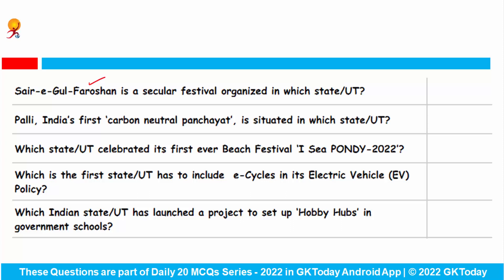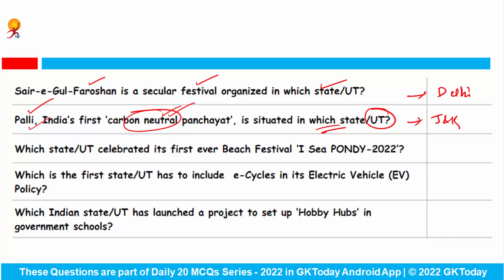Sere Kul Farosha is a secular festival organized in which state or union territory? This is a festival belonging to Delhi. India's first carbon-neutral panchayat is situated in which state or union territory? India's first carbon-neutral panchayat has been found in Pali, which lies in the union territory of Jammu and Kashmir.